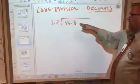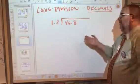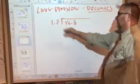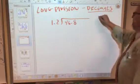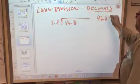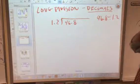Let's say you got 46.8, divided by 1.2. And you want to find out how many times 1.2 goes into 46.8.